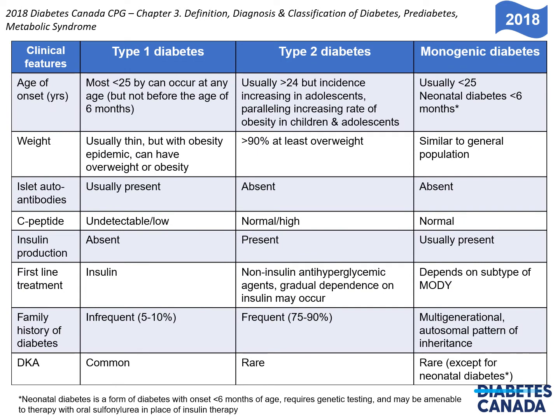The chapter includes information to help distinguish between type 1, type 2 and monogenic diabetes. These are sometimes difficult to distinguish in clinical practice, but this distinction may be important as the treatment for the different conditions may vary. Age of onset in type 1 diabetes and monogenic diabetes is usually less than 25 years, but it can occur older.